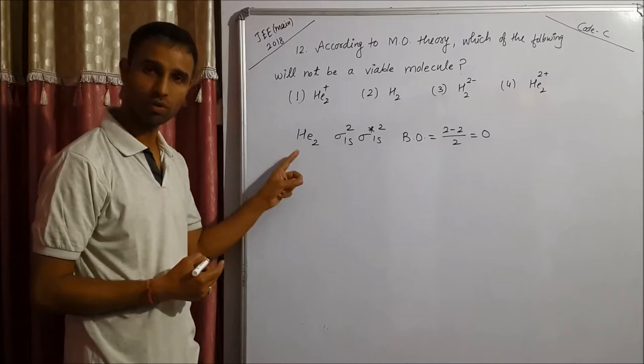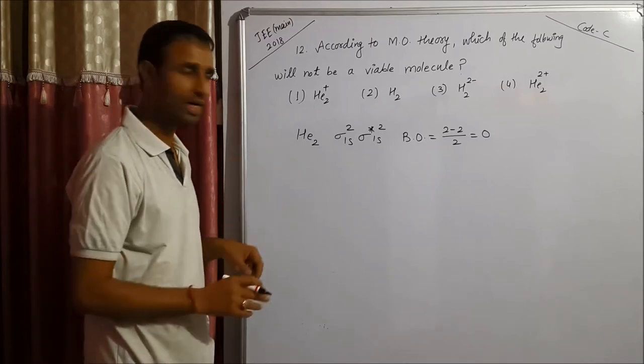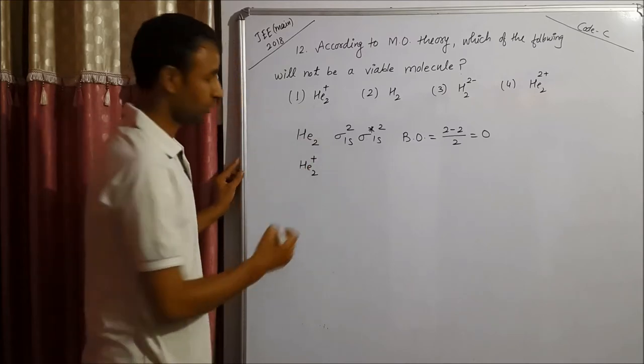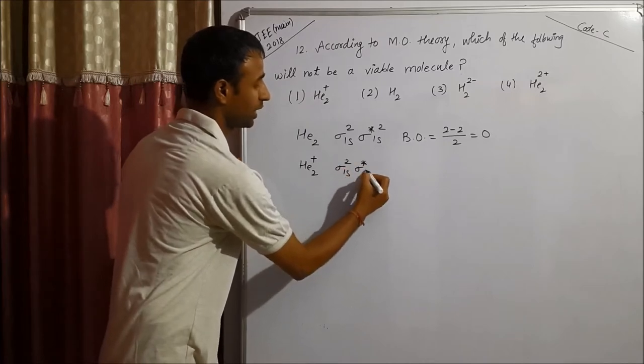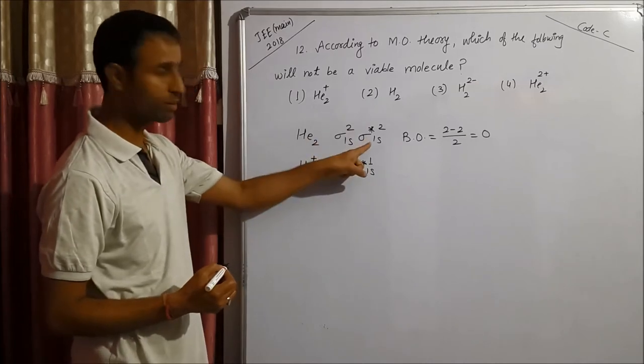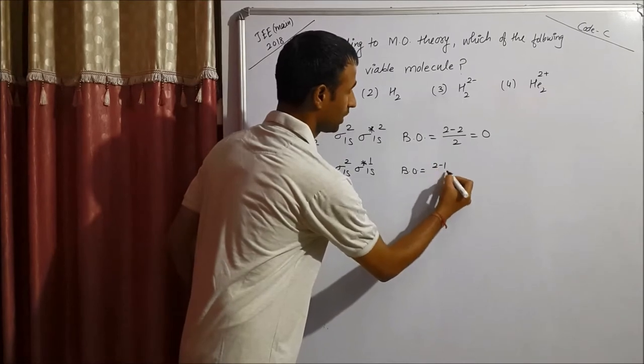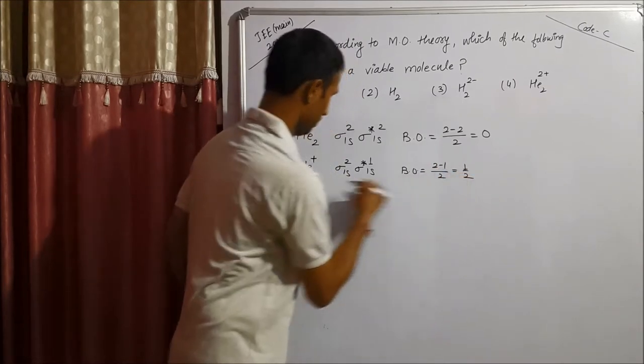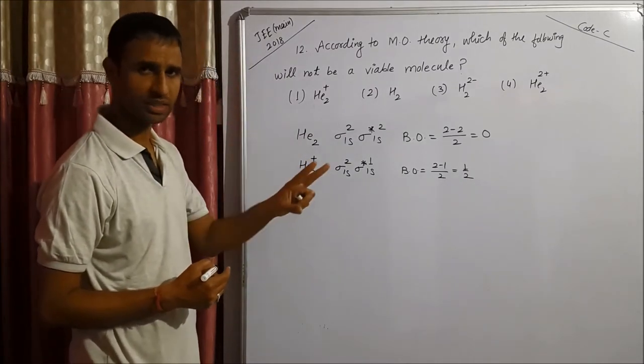If bond order is 0 for any molecule or ion, it does not exist. Now compare He2+. In He2+, one electron is removed from the highest occupied molecular orbital. Bond order comes out to be (2 minus 1) over 2, means half. It is unstable, but it does exist.